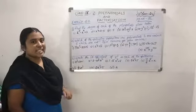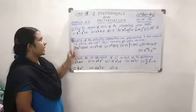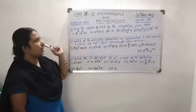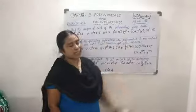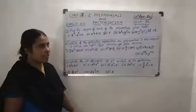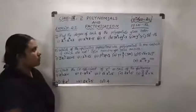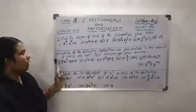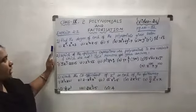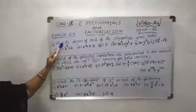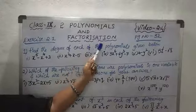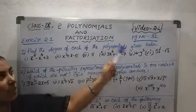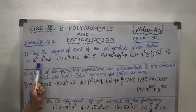We will discuss Exercise 2.1, page number 32. These questions are located on page number 32. Now our first question is: find the degree of each of the polynomials given below.